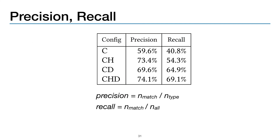We also measured the precision and recall of the various configurations, where precision is the number of inferred matches divided by the total number of inferred types, and recall is the number of inferred matches divided by all positions whether or not SimTyper inferred a type. There are some interesting trade-offs among the configurations discussed more in the paper, but most notably the chd configuration scored highest on both precision and recall, once again suggesting it is an effective approach to inferring usable types.